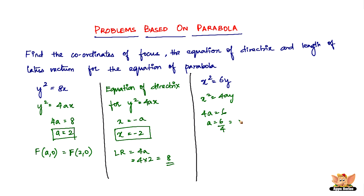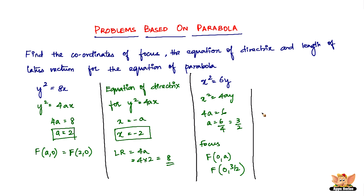Comparing x² = 6y with x² = 4ay, we get 4a = 6, so a = 6/4 = 3/2. Now that we have a, we can find the focus. For x² = 4ay, the coordinates of the focus are F(0, a), so the focus is F(0, 3/2).